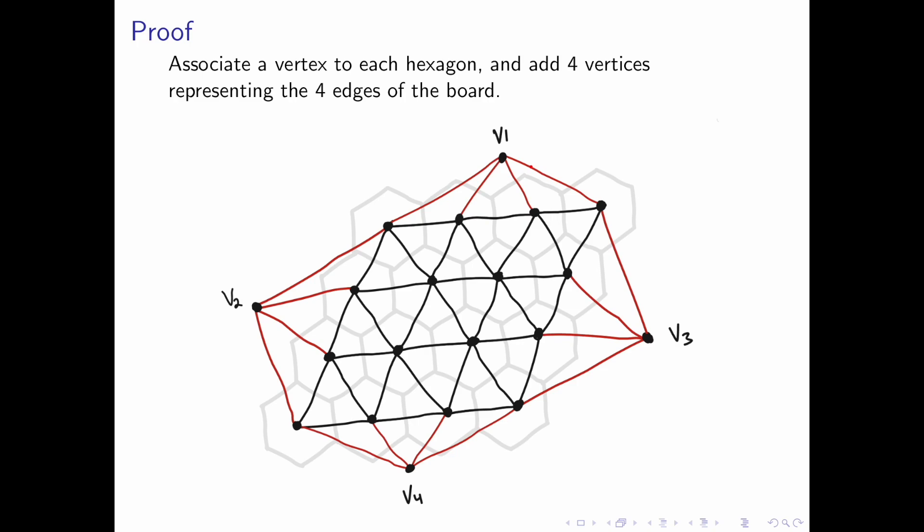Next, we will add four vertices, v1, v2, v3 and v4, that represent the four edges of the board. These vertices will be connected to each hexagon that is on that side of the board.